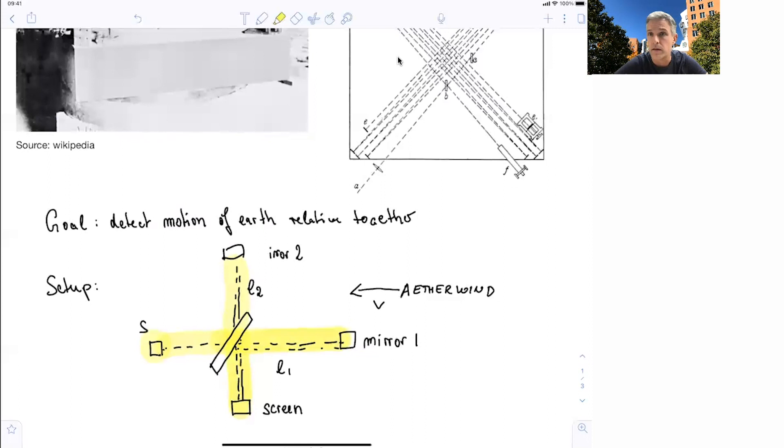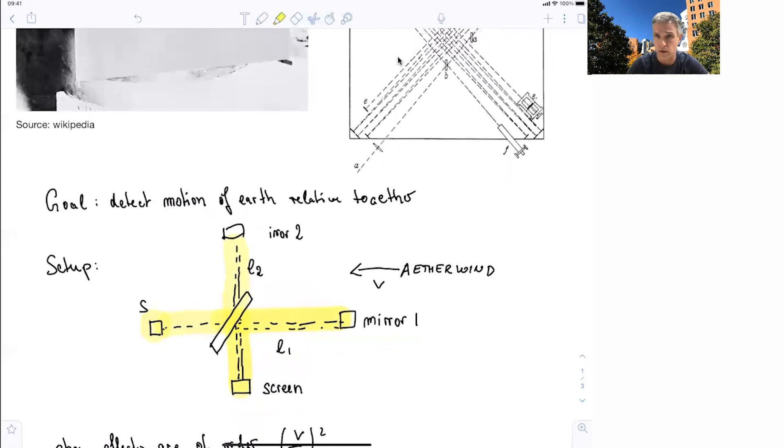If ether is the medium in which light travels, then the velocity needs to change. The velocity of light in this ether, in this medium, will change. If there's no ether wind, there's no change in the velocity of the light. The result of the experiment is an interference pattern on the screen. The experiment is called an interferometer.